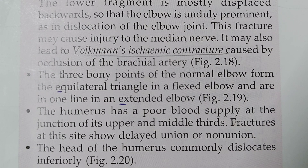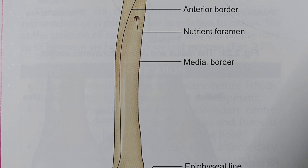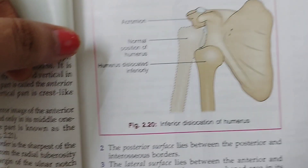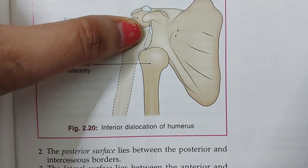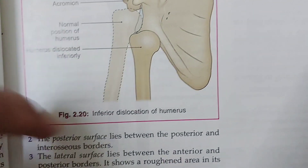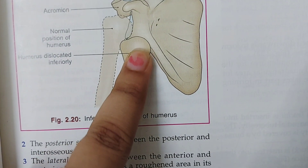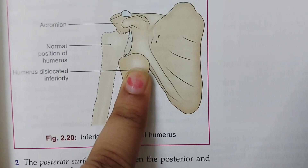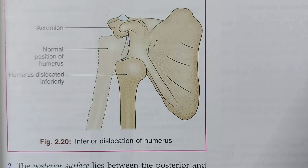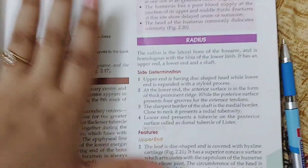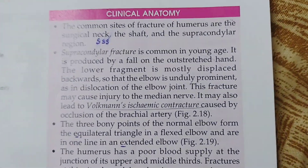The head of the humerus can be inferiorly dislocated. Look at the diagram — the normal position of the humerus head is shown, and beside it the position when it is dislocated inferiorly, so you can clearly see the difference.